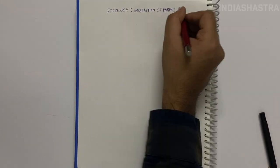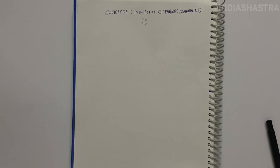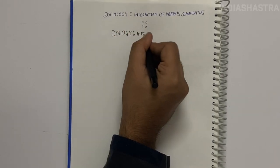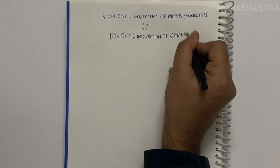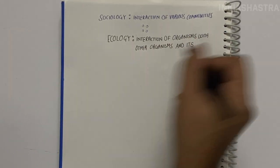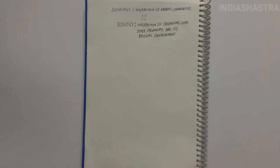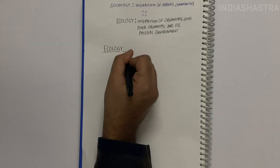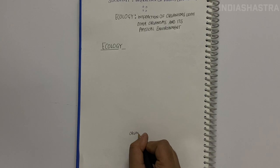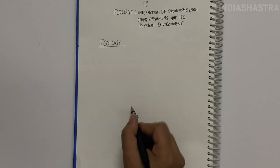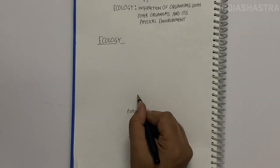Sociology teaches us interaction of various communities. Similarly, Ecology studies the interaction among organisms and between the organism and its physical environment. Ecology is concerned with four levels of biological organizations: Organisms, Populations, Communities and Biomes.